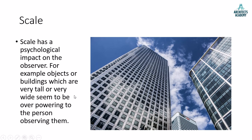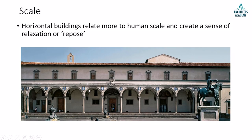Scale has a psychological impact on the observer. Objects or buildings which are very tall or very wide seem overpowering to the person observing them. Standing below such a building makes it feel overpowering. Horizontal buildings, on the other hand, relate more to the human scale and create a sense of relaxation or repose — when you look at a building with horizontal lines, you feel relaxed and can easily relate to it.